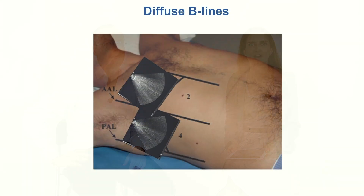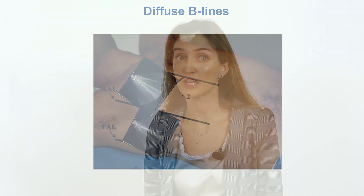Diffuse B-Lines means that multiple B-Lines should be seen in at least two regions of each hemithorax. But there is another situation: if you see multiple B-Lines concentrated in one or more areas of just one hemithorax, this is a focal situation and not a diffuse condition.